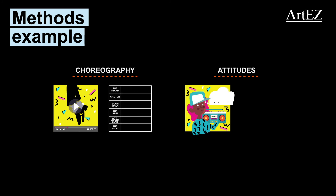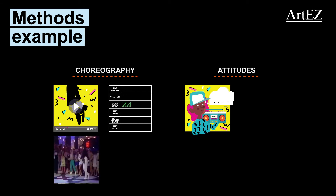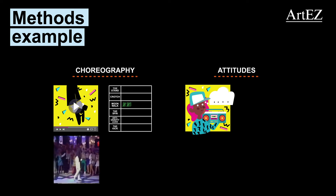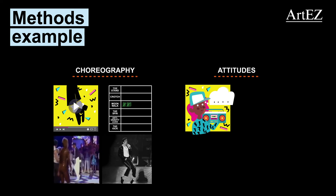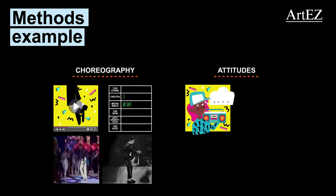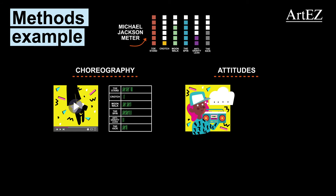Maybe you could use a checklist to measure what kind of moves are used in what video material. For instance, if moonwalking is apparent, you measure one moonwalk by giving it a check in the list. If the dancer grabs his or her crotch and screams in agony, that could also be considered a Michael Jackson type choreography move. By counting these choreography elements, you could compare videos to see which one has higher Michael Jackson levels.